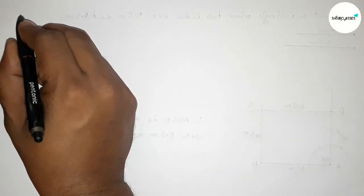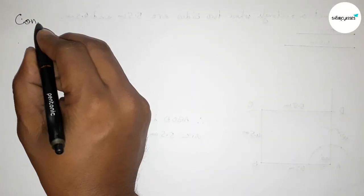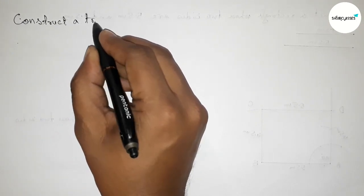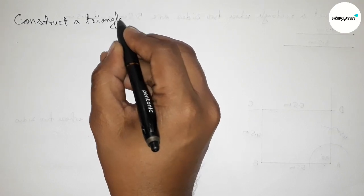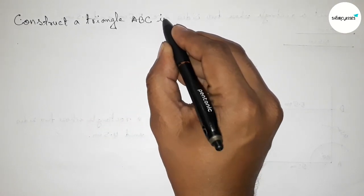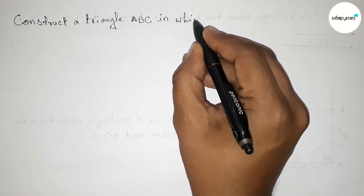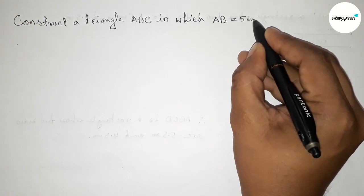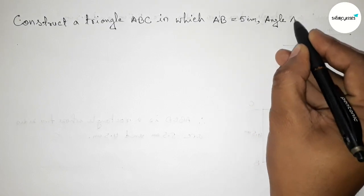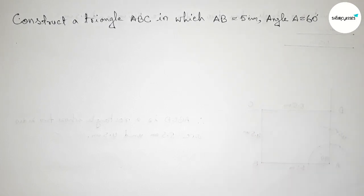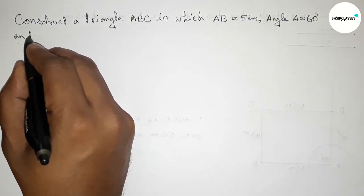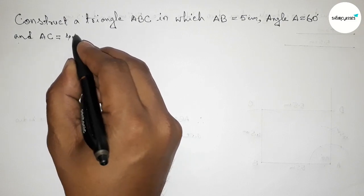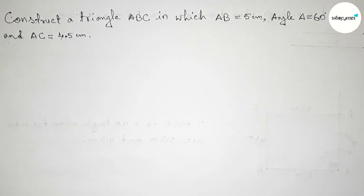Hi everyone, welcome to SI Share Classes. Today in this video we have to construct a triangle ABC in which AB equals 5 centimeter, angle A equals 60 degree, and AC equals 4.5 centimeter. Please watch the video till the end. Let's start.